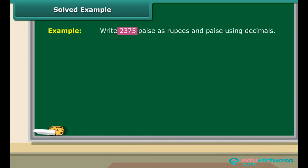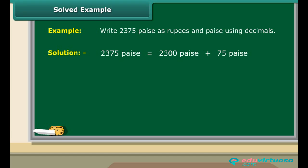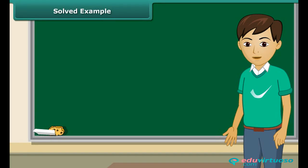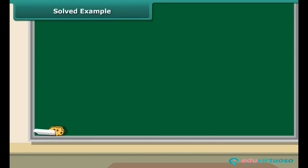Let us convert money expressed in paise into rupees and paise using decimals. Express 2,375 paise in rupees and paise using decimals. 2,375 paise equal 2,300 paise plus 75 paise, which is the same as 23 rupees plus 75 paise. This can be expressed as 23 rupees plus 75 upon 100 rupees. So, the answer is rupees 23.75.